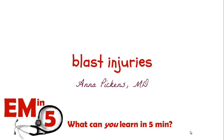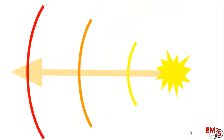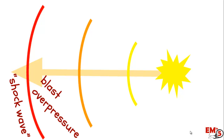This week for EM in 5, we're going to talk about blast injuries. These injuries mostly come from a combination of the heat and the kinetic energy caused by the chemical combustion. So let's talk through what happens when you have a blast. First off, you get this blast overpressure — a shock wave — basically a kind of blast of energy.